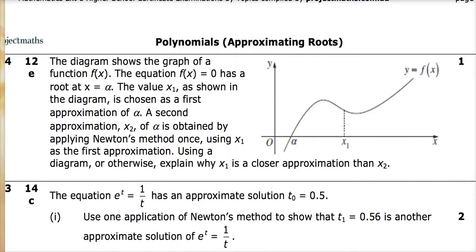I'm in screencast. So the value x1 is chosen as the first approximation, a second approximation of x2. x2 of alpha is obtained by applying Newton's method once using x1 as a first approximation. Using a diagram or otherwise explain why x1 is a closer approximation than x2. So what you're going to do is you're going to say Newton's rule uses tangents and we'll do the tangent to the curve at x1. The tangent is the gradient, so the tangent at the curve you would draw a straight line like that down here and you'd show that your second x2 is there.